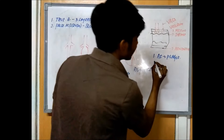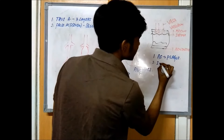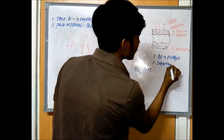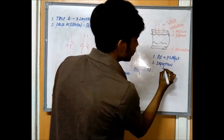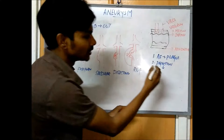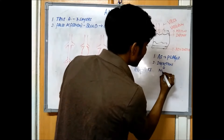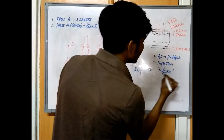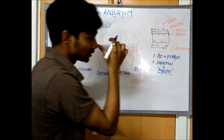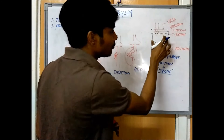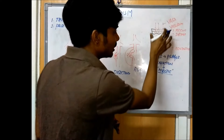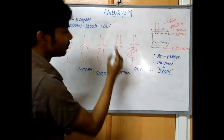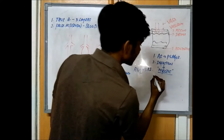The second cause is infection. Aneurysm caused by infection is called mycotic aneurysm. Due to the infection, there is less flow of blood to the three layers, which causes aneurysm to form.